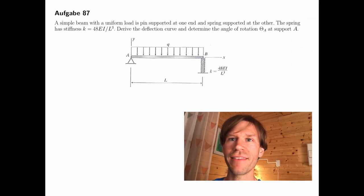In example problem 87 we have a simple beam with a uniform load of Q, that's pin supported at A. At B there is a spring that supports the beam. The spring has the given stiffness of K and we should derive the deflection curve or the curve of the elastic line and determine the angle of rotation at A.